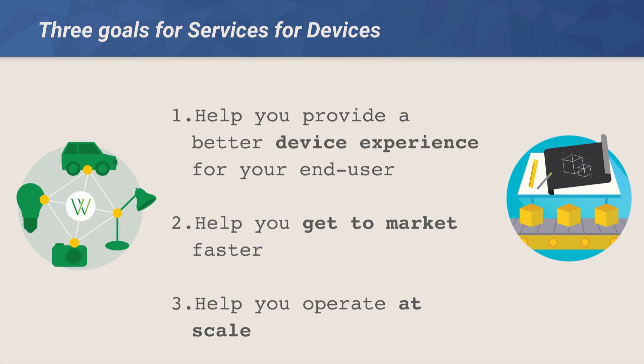These Google services have three goals. First, to help you build a better device experience for your end user — Weave is a good example, as it is primarily end user facing. Second, help you get to market faster. A lot of these services provide core functionality like metrics and crash reporting, included in the platform right out of the box. And third, help you operate at scale. The over-the-air update service is a good example — it's very different managing a couple of devices versus millions of devices out in the field.